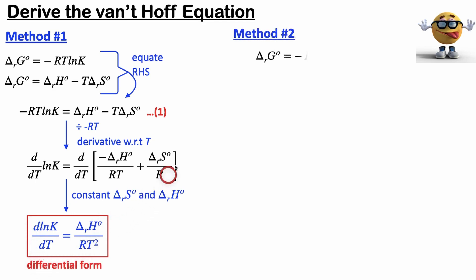So that's method 1. Method 2 will start off with the same equation as before, the Gibbs energy equilibrium equation. And from here we're going to divide both sides by T and then take the derivative with respect to T. So this is what it looks like.